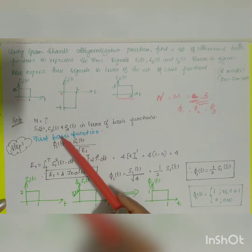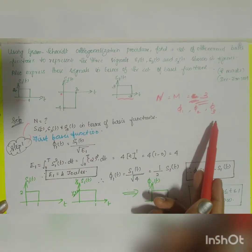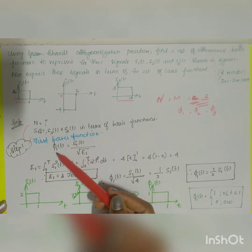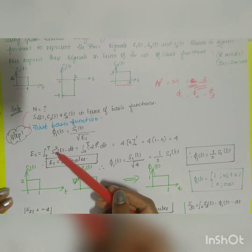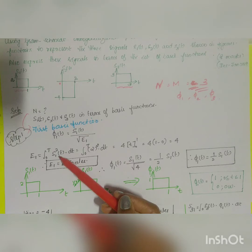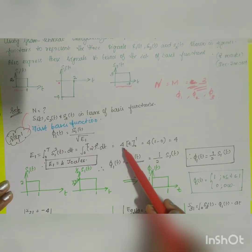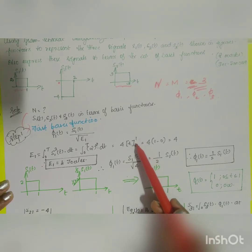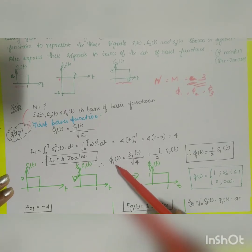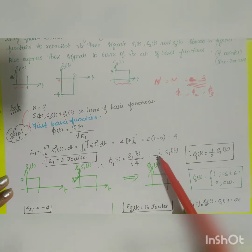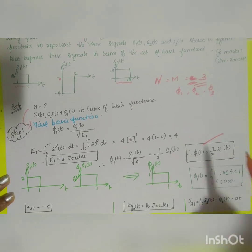The second task is to express s1(t), s2(t), and s3(t) in terms of the basis functions. First, let us find φ1(t). The direct equation is φ1(t) = s1(t) / √E1. The energy E1 = ∫₀¹ s1²(t) dt = ∫₀¹ 4 dt = 4 joules. Therefore, φ1(t) = s1(t) / √4 = (1/2)·s1(t).